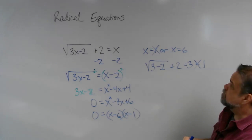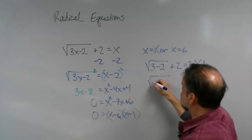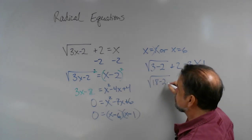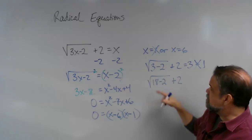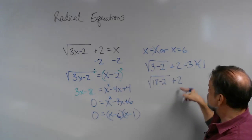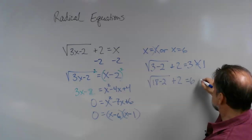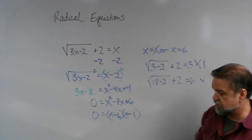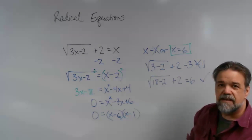So no, that does not work. So 1 does not work. Now let's try 6. The square root of 3 times 6 is going to get me 18 minus 2 plus 2. 18 minus 2 is 16, the square root of 16 is 4, plus 2 is 6. And does that equal 6? Yes it does.